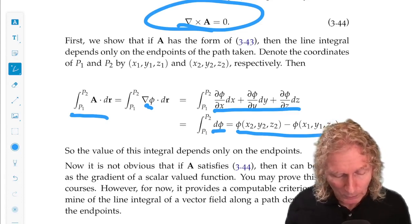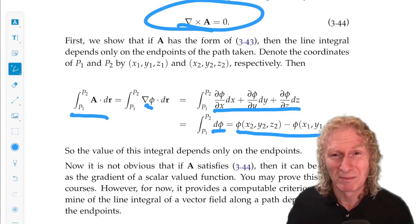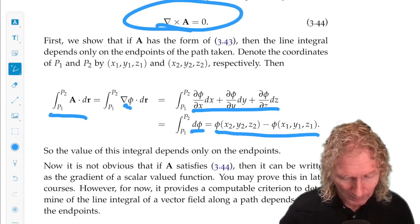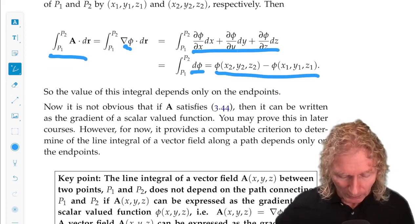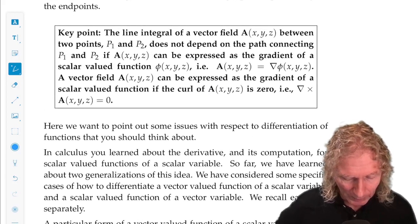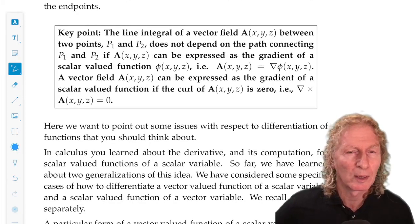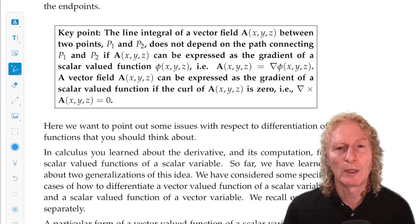And if we can find phi such that the gradient of phi is A, then computing this thing is very easy. Okay, we're going to see a lot of examples of this. I've explained these things in a little more detail and some of the mathematical issues in the rest of the chapter, but I'm not going to go through that. I encourage you to read that.